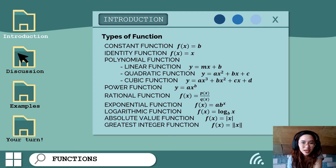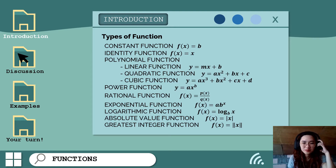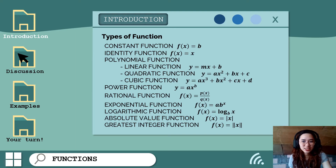Power function has the form ax raised to b, wherein b is a constant — polynomial functions are similar to power functions. We also have rational function, exponential function, logarithmic function which will be discussed later, the absolute value function, and the greatest integer function. Let's proceed with our discussion.